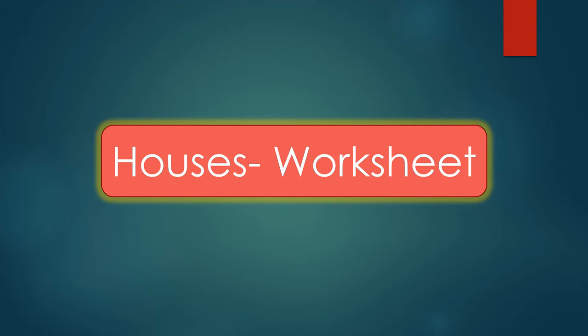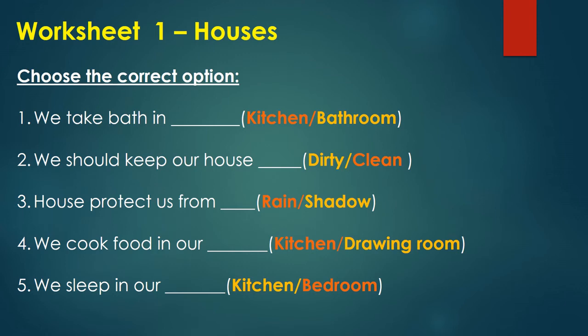After completing our chapter, we will now move to the worksheet section. Worksheet one — choose the correct options. First: we take bath in the bathroom. Second: we should keep our house clean. Third: a house protects us from rain. Fourth: we cook food in our kitchen. Fifth: we sleep in our bedroom.